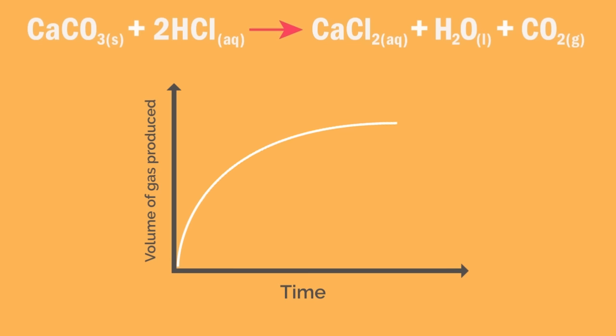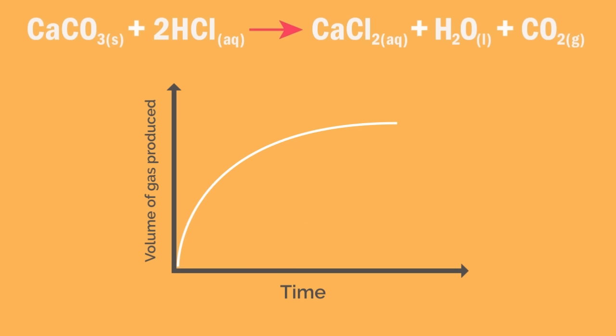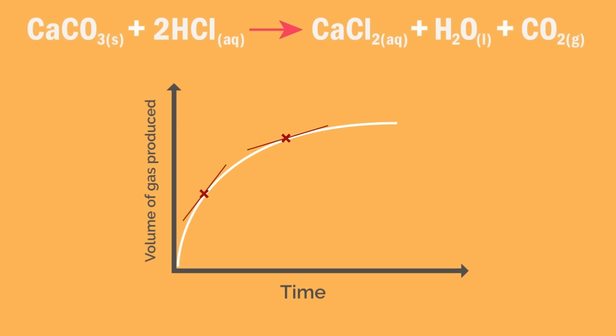As before, the rate of reaction at point A is given by the gradient at A, which is y over x, and the rate of reaction at B is given by the gradient at point B, which is y-dash over x-dash. What do you think is happening to the rate of reaction as it proceeds? Pause here and try to get the answer. As in the other test, it slows down — the rate of reaction decreases.